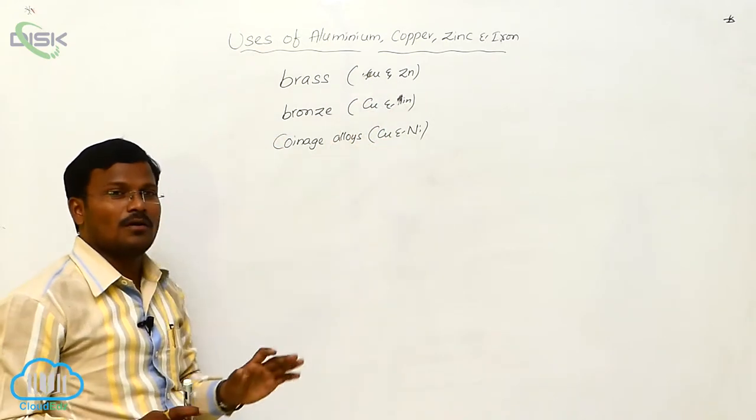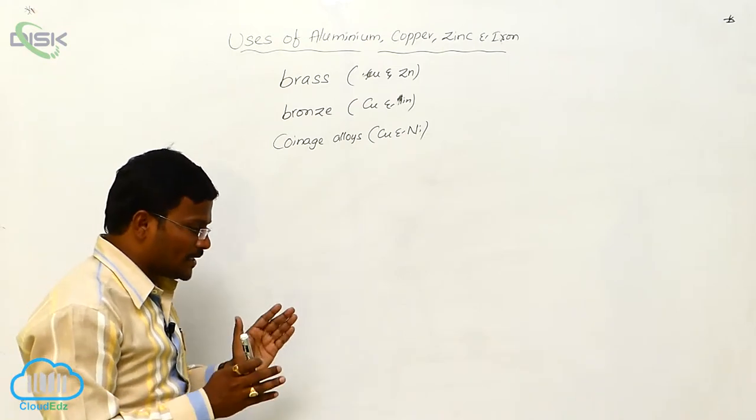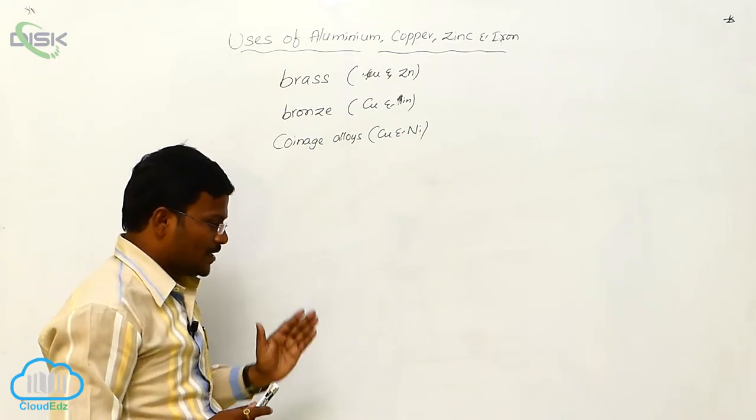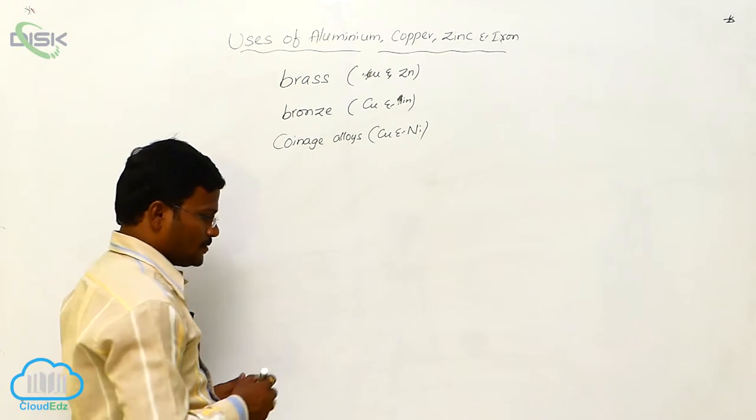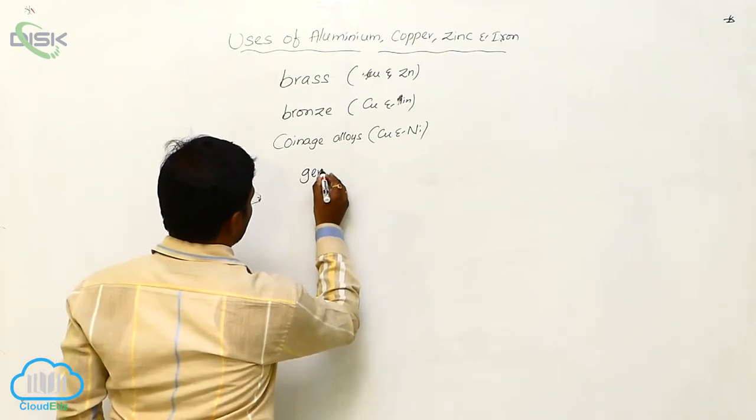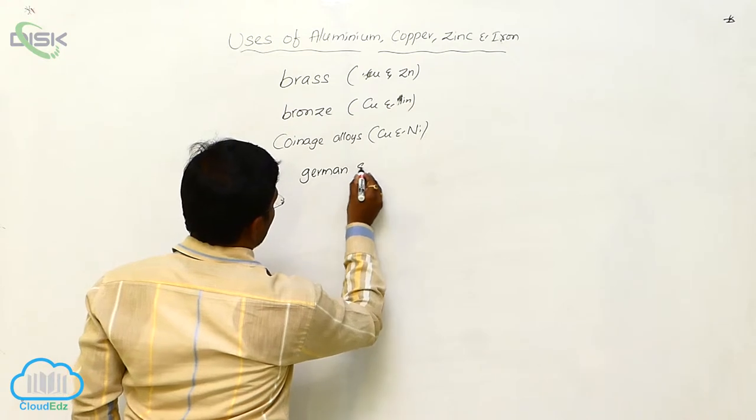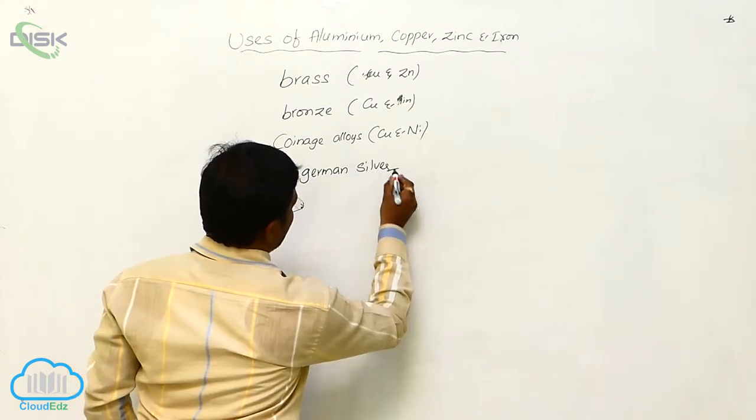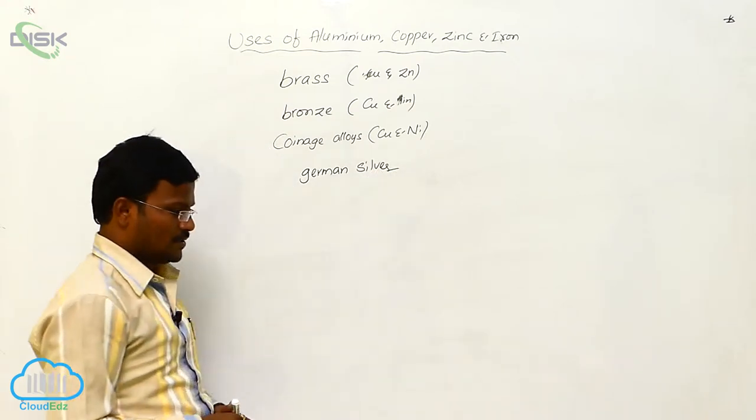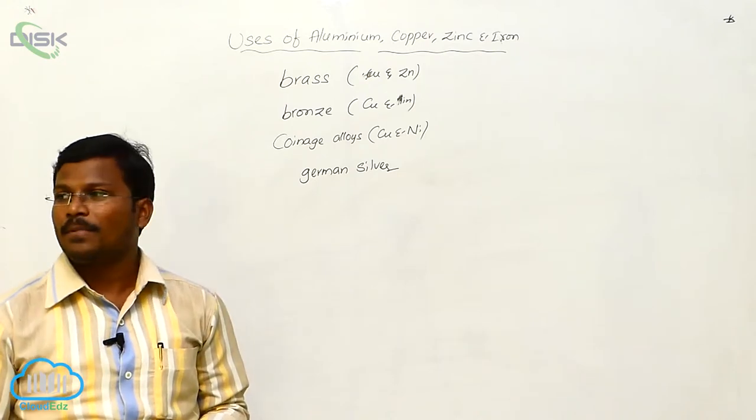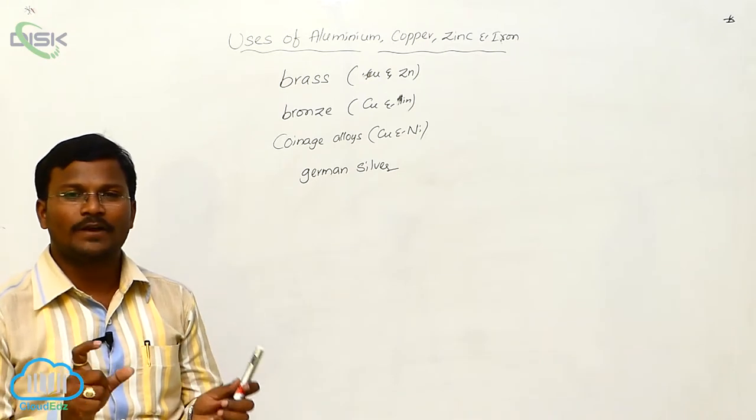Whereas, one more alloy, the most important alloy extracted by Zinc is German Silver. German Silver, in which Zinc, Nickel and Copper are present in different ratios.